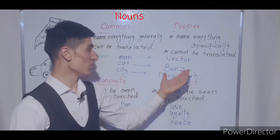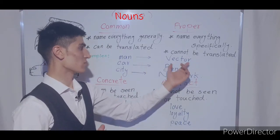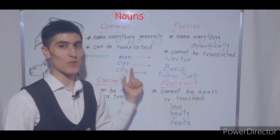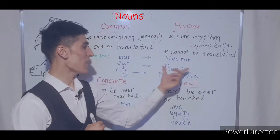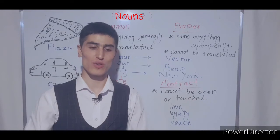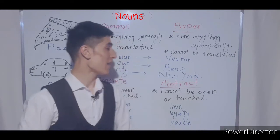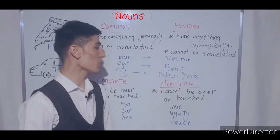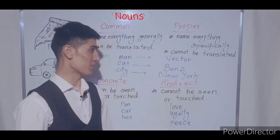Here are some examples of proper nouns. 'Victor' is the name for a specific person — the common noun was 'man,' which is general, and 'Victor' is specific. Then we have 'Benz,' which is the name for a specific type of car. 'City' was the common noun, and 'New York' is the proper noun for a specific city.